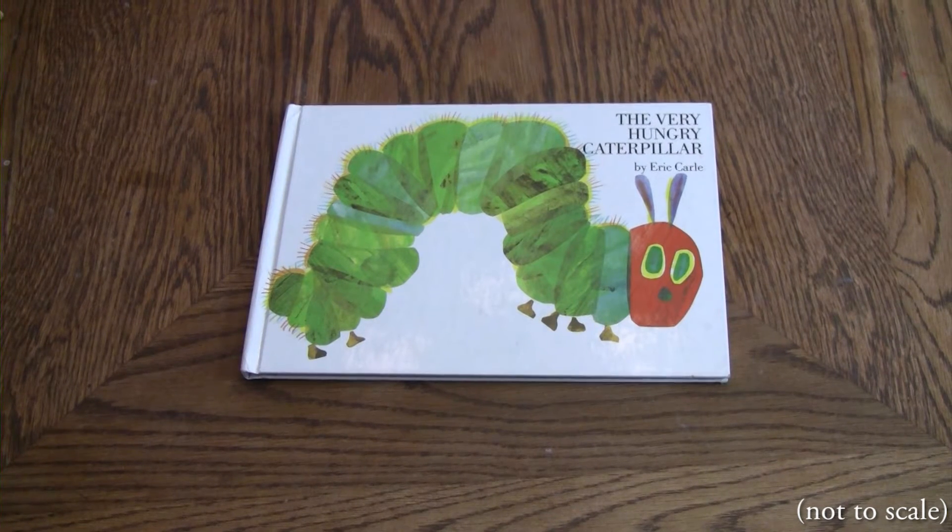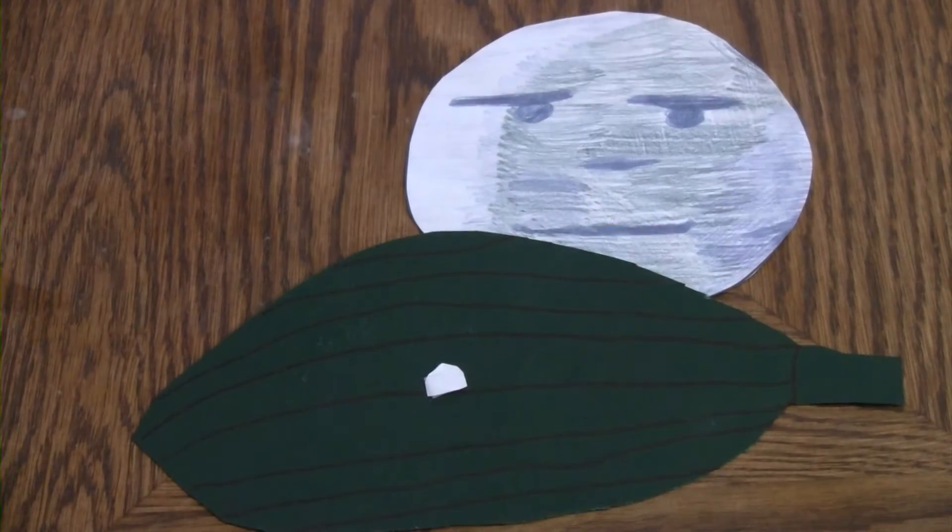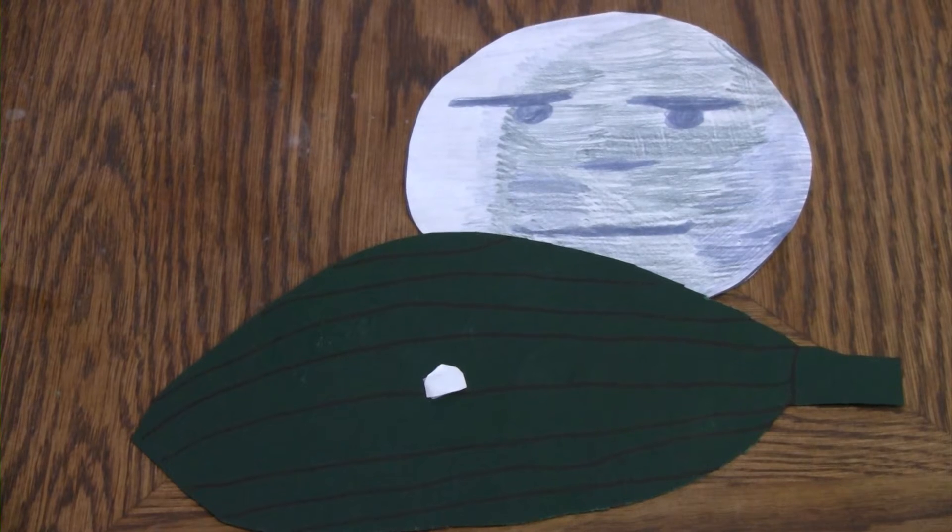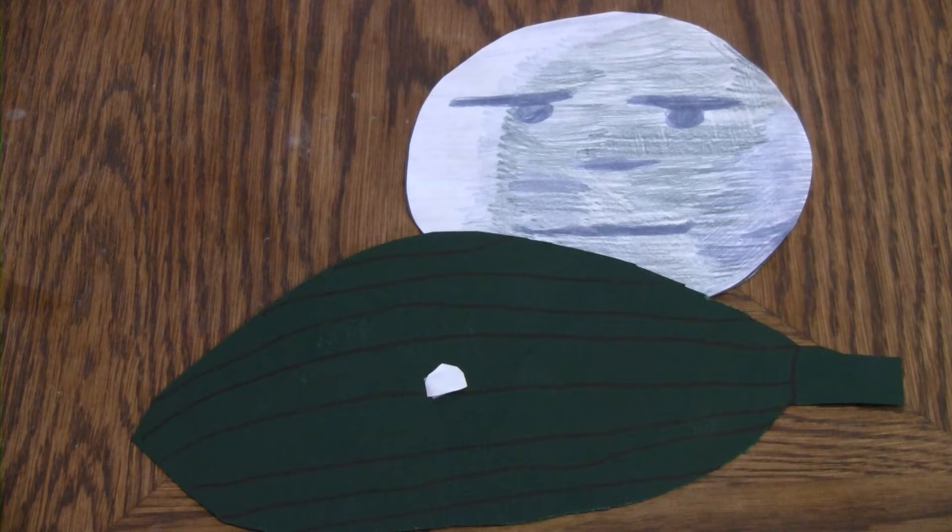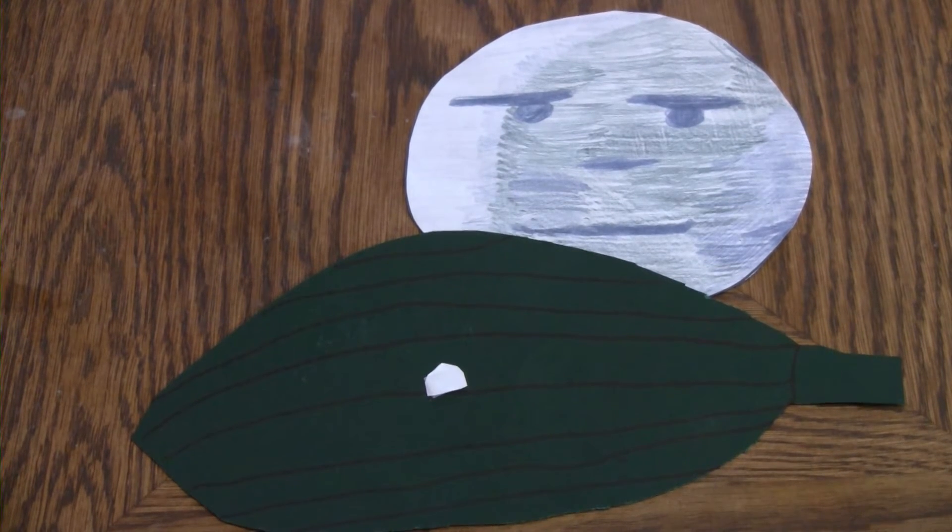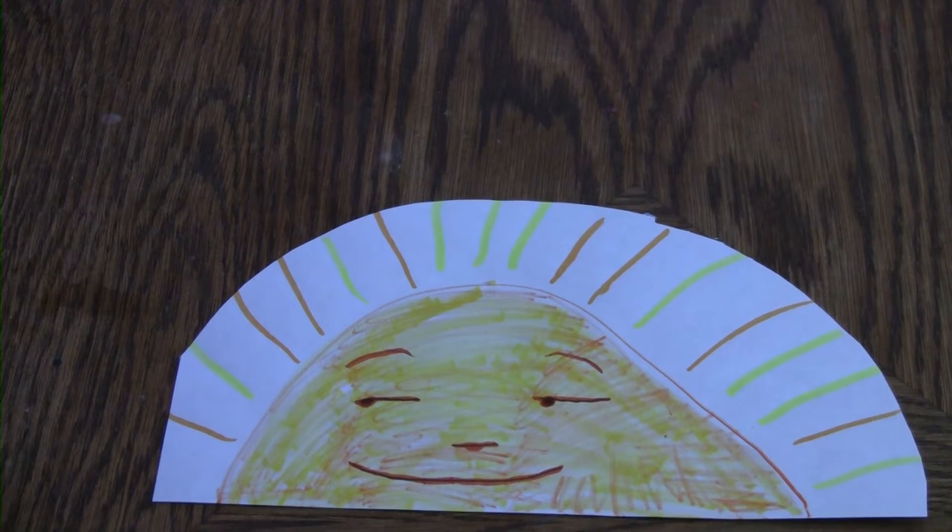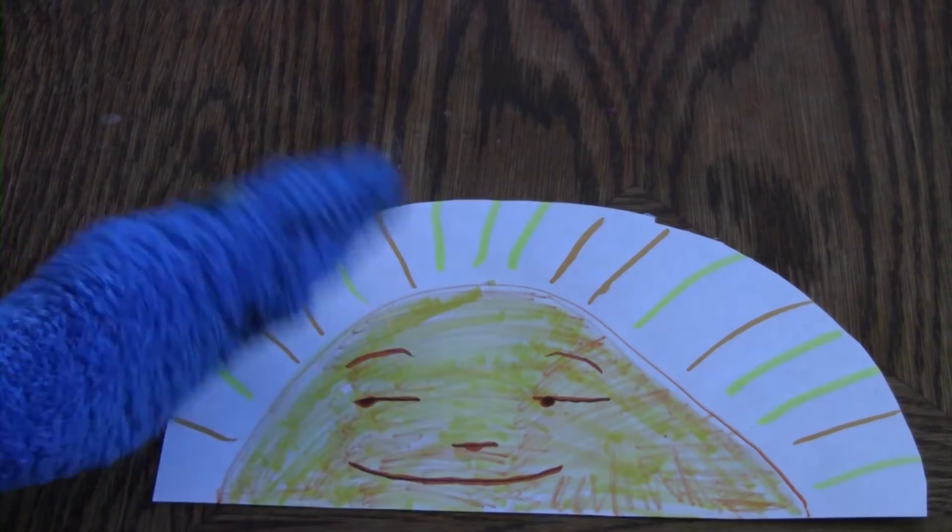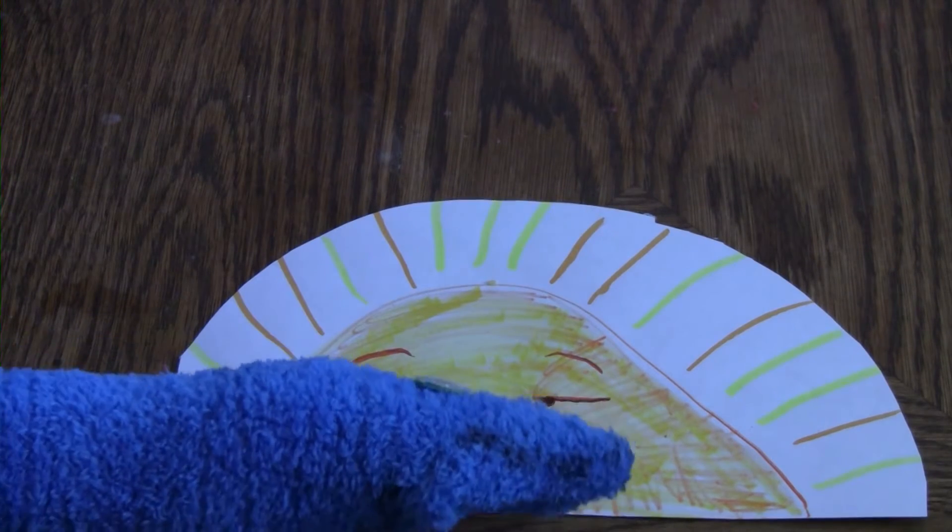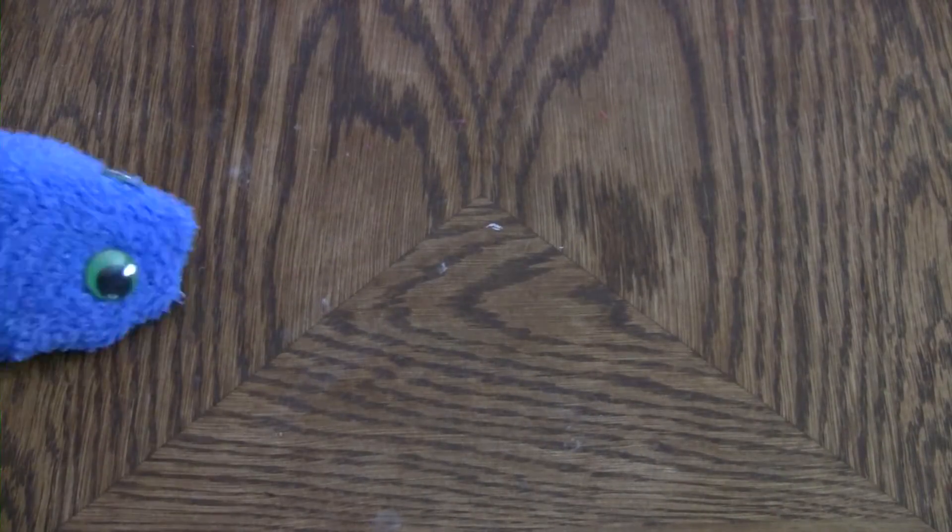The Very Hungry Caterpillar. In the light of the moon, a little egg lay on a leaf. One Sunday morning, the warm sun came up and pop, out of the egg came a tiny and very hungry caterpillar. He started to look for some food.